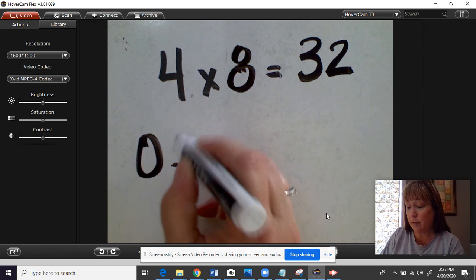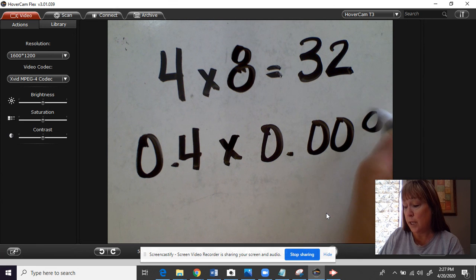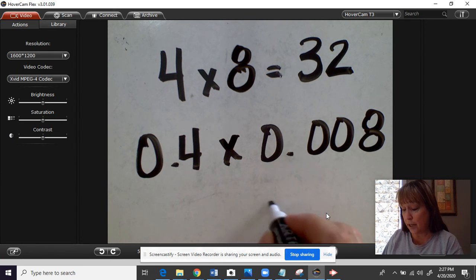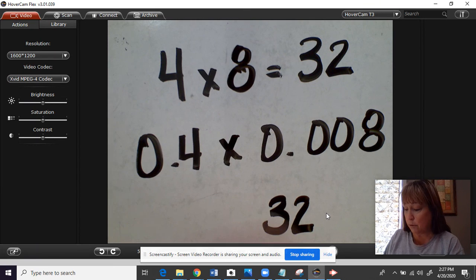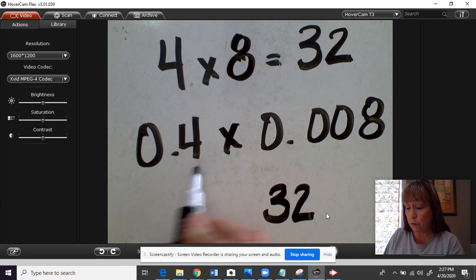Now if we did 0.4 times 0.008, we know we're going to have 32 in our answer because that's still there. We have to move the decimal from the whole number over into the decimal section. So we have to count how many places we need to move it,